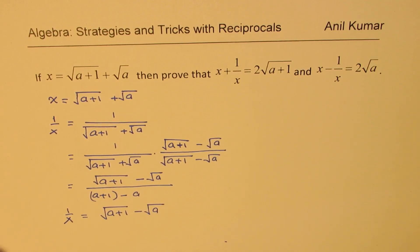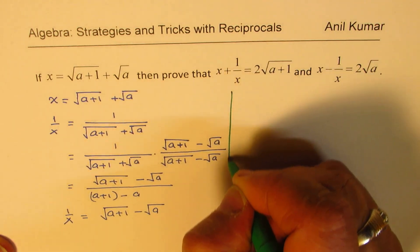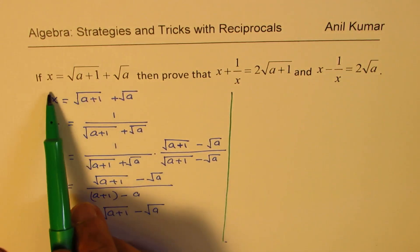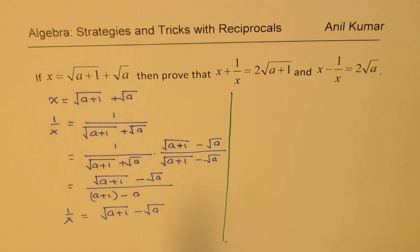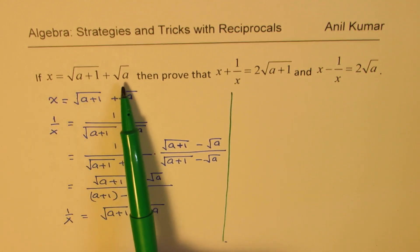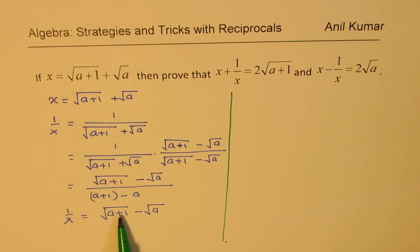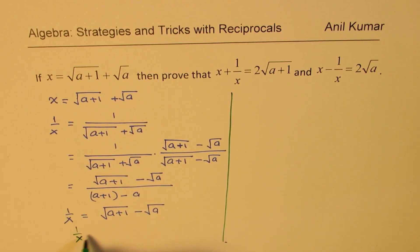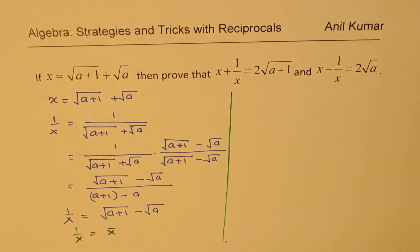What you see here is that if x is given as the sum of two consecutive radicals like this, then 1 over x is its conjugate. So 1 over x is basically equal to the conjugate of x. This is the base for the set of questions we have taken now.